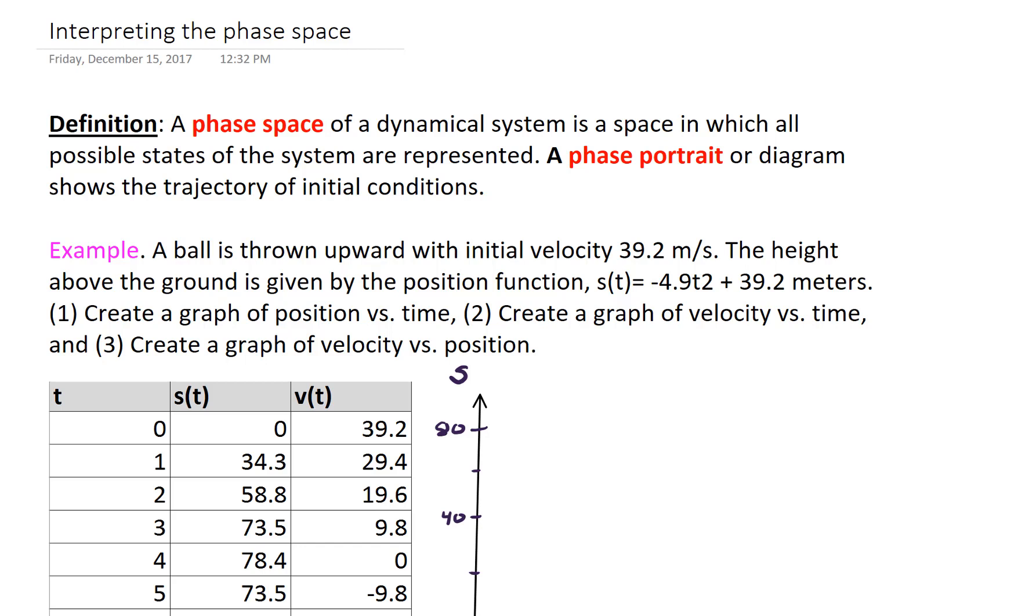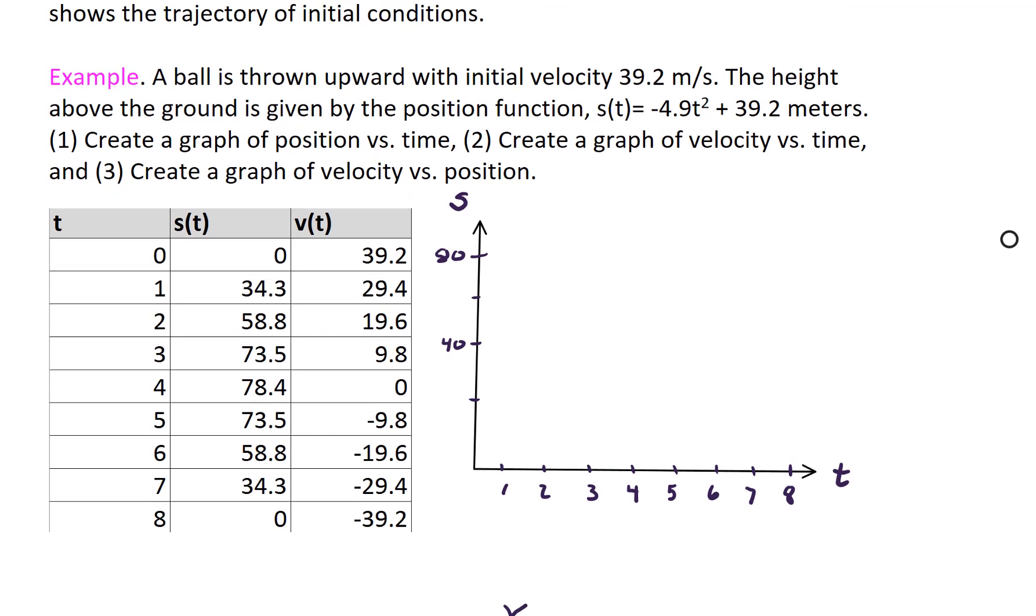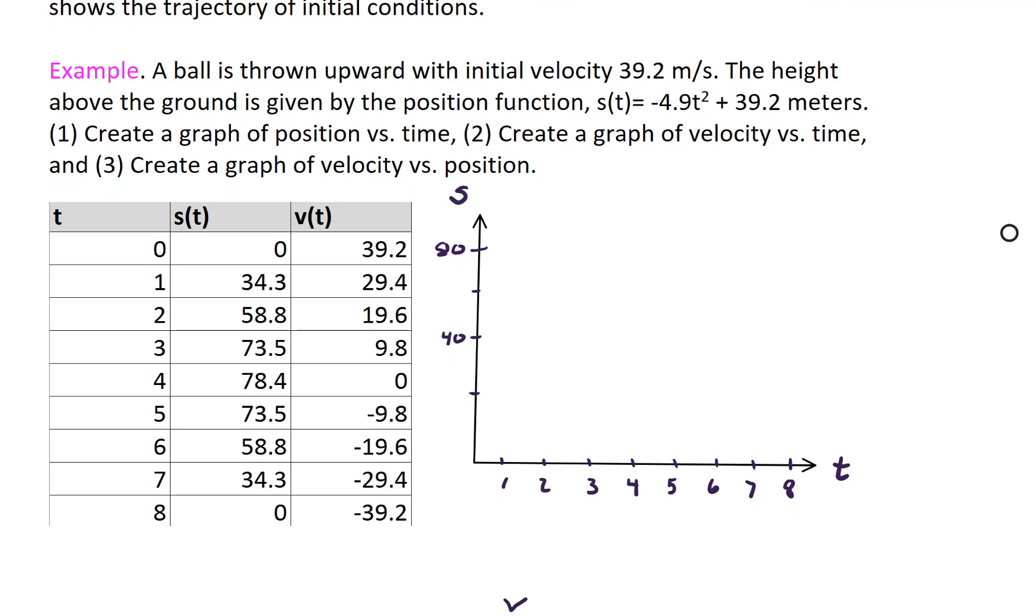Alright, so let's take a look at an example, and this is just an introduction. We will dive into this concept in more detail as we move on in our course. So as an example, a ball is thrown upward with initial velocity 39.2 meters per second. The height above the ground is given by the position function s of t equals negative 4.9 t squared plus 39.2 meters.